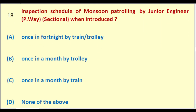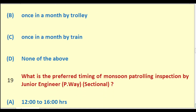Inspection schedule of monsoon patrolling by Junior Engineer Permanent Way Sectional when introduced: once in fortnight by train/trolley; once in a month by trolley; once in a month by train; none of the above. The right answer is: once in fortnight by train/trolley.